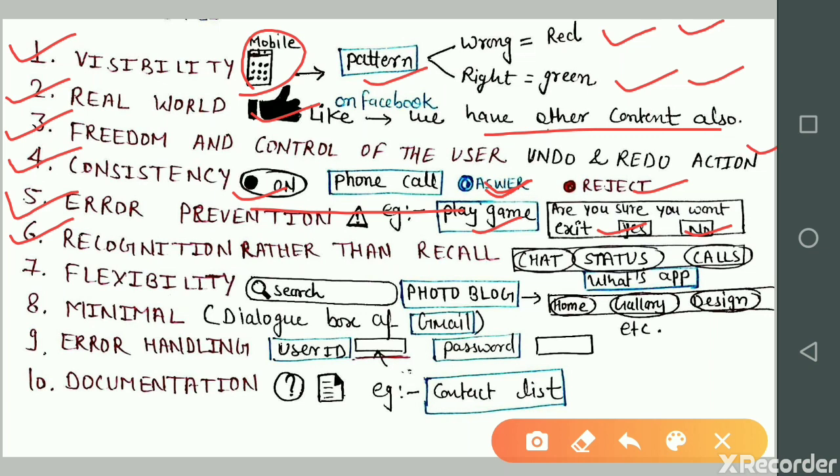Principle number six is recognition rather than recall. Recognition allows the interface to offer content sensitive help and information capable of guiding the user. Example is WhatsApp: there, chats, status, and calls - these all icons have different tasks or actions. You click one by one and you can see in the WhatsApp window.